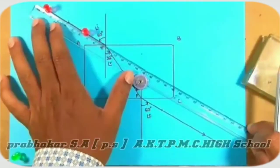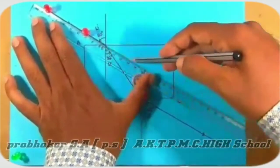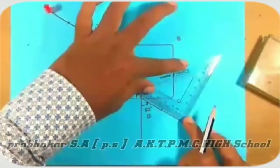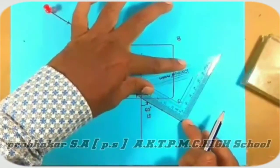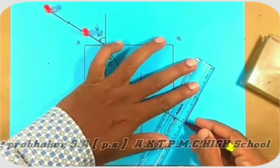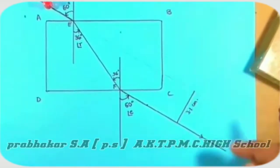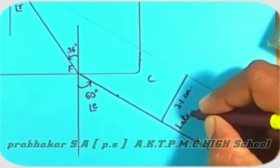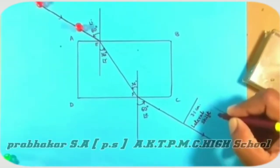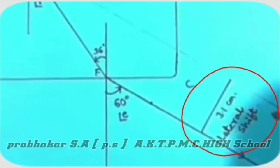Here, the light ray refracts at the glass slab and bends towards the normal as it goes from air to glass. After that, it refracts from glass to air. Now, if you produce the incident ray, the distance between the emerging ray and the incident ray is called the lateral shift. The emerging ray and the produced incident ray are parallel to each other, and the distance between these two parallel rays is called the lateral shift. Here, the lateral shift is 3.1 centimeters.